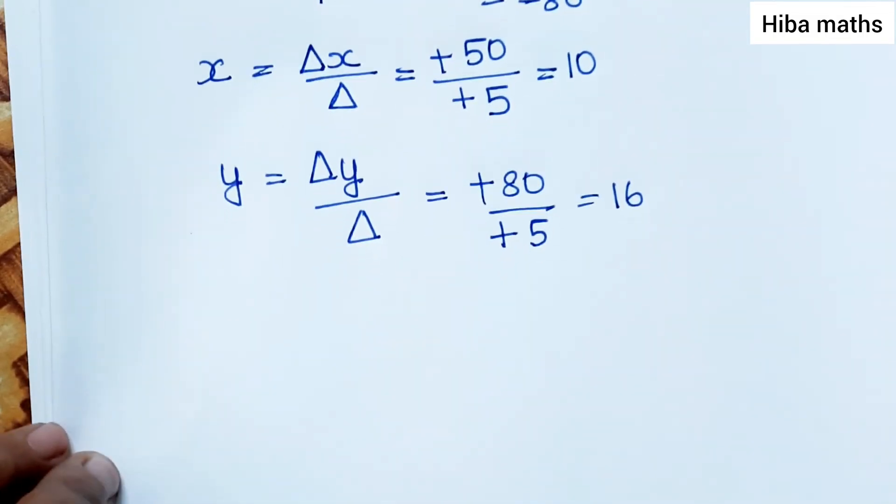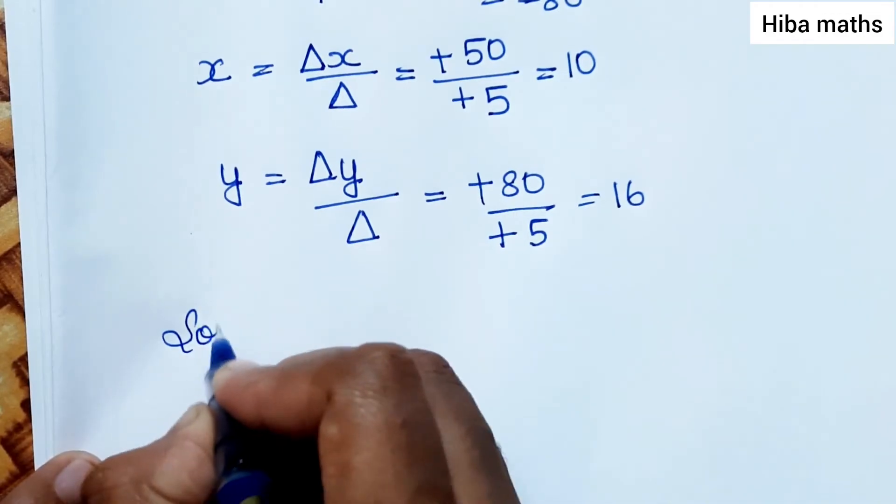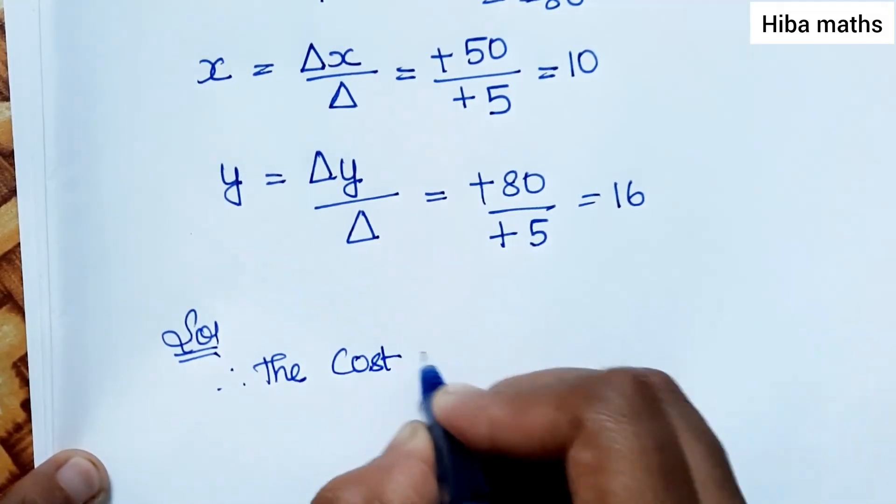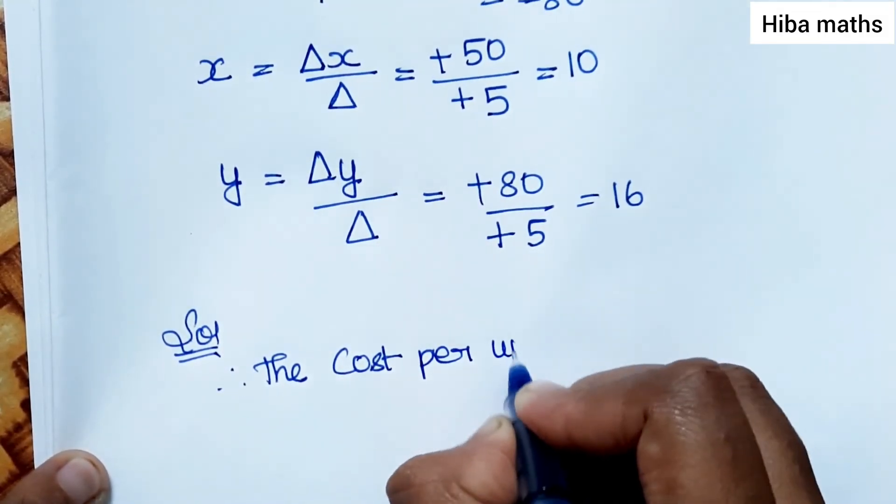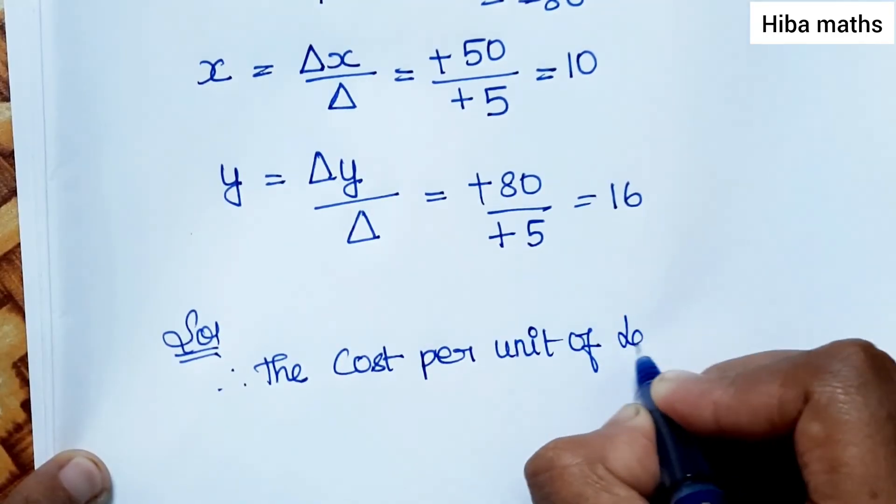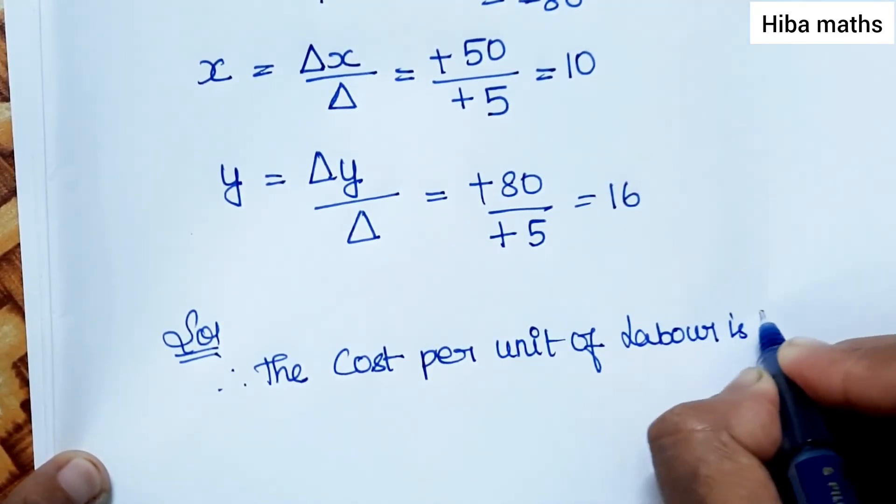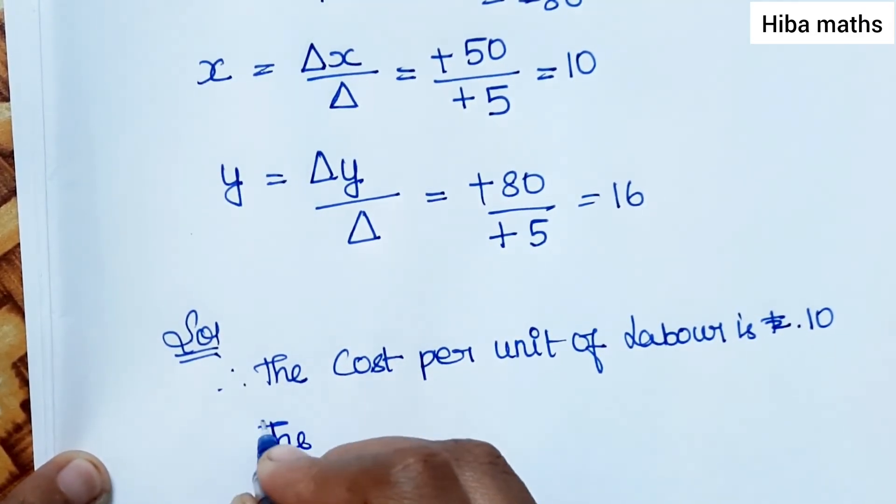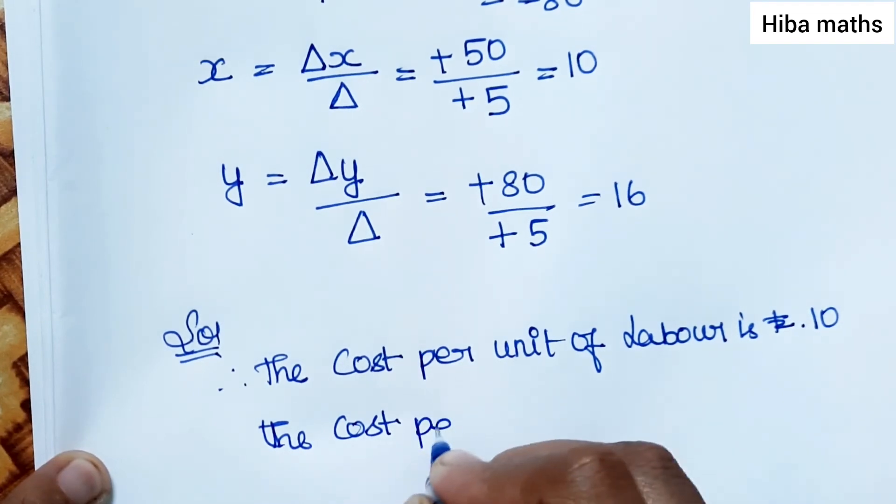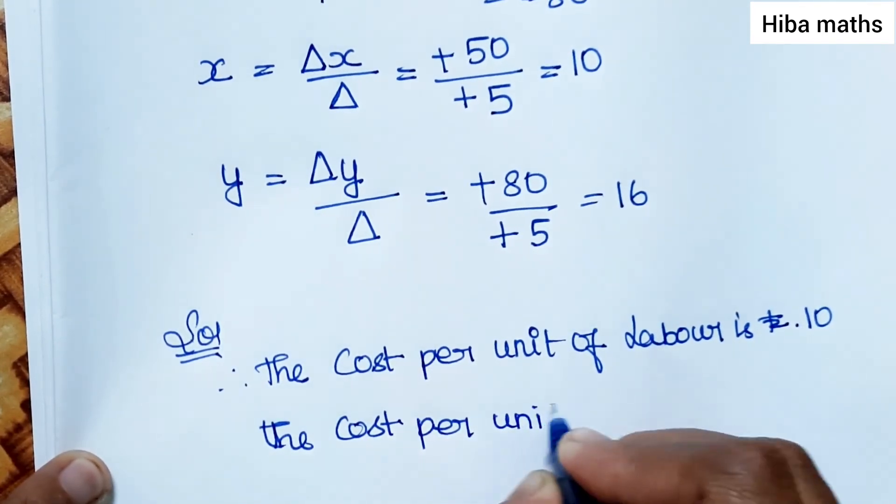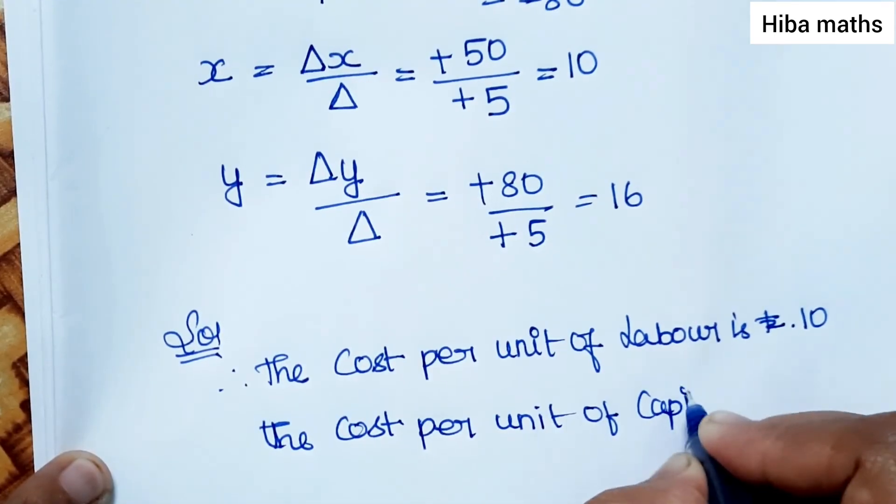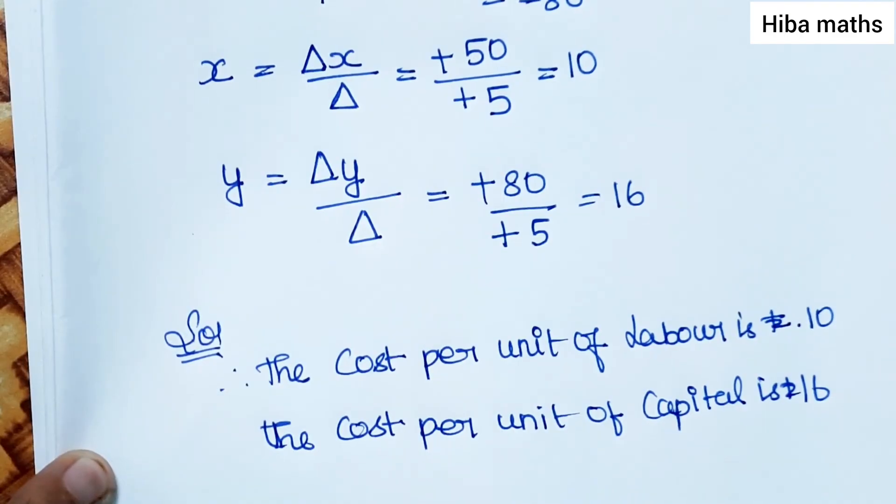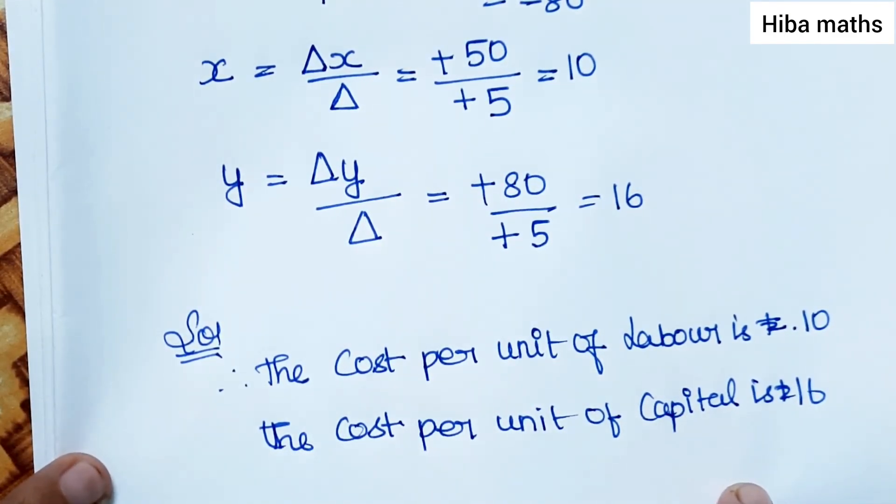Therefore, the cost per unit of labour is rupees 10, and the cost per unit of capital is rupees 16. Thank you so much for watching.